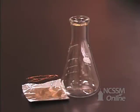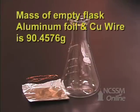In the Dumas method of determining the molar mass of a volatile liquid, we will start out massing an empty 125 milliliter Erlenmeyer flask, a small piece of aluminum foil, and a small piece of copper wire.